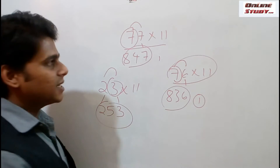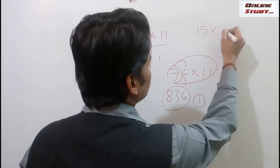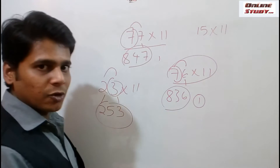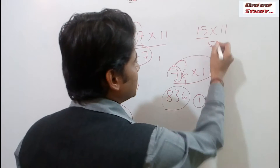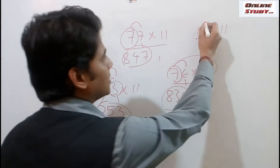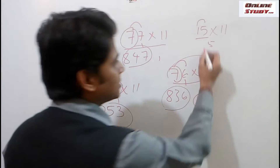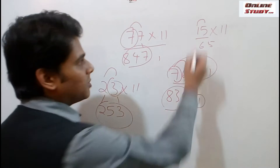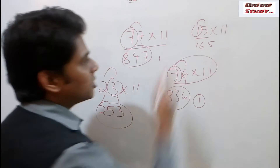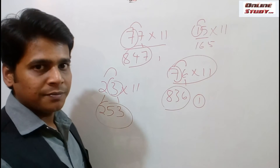We will see another example: 15 into 11. We will place 5 first — that is the units place. Then 5 plus 1, that is 6. And then place 1 as it is. So the multiplication of 15 into 11 is 165.